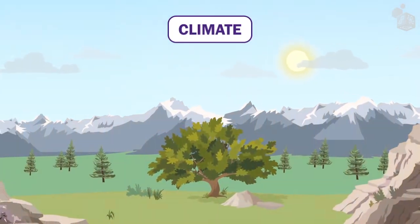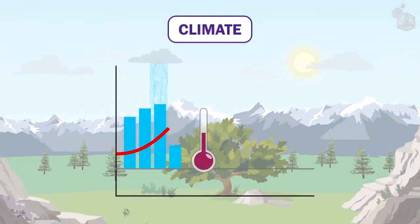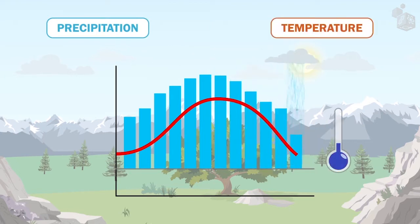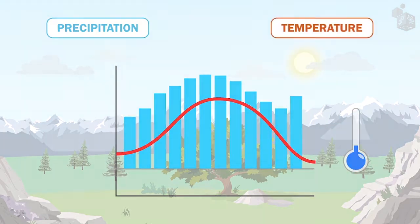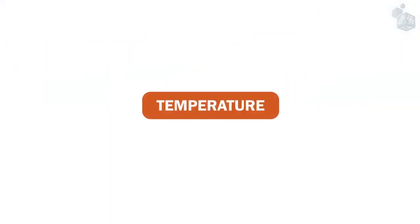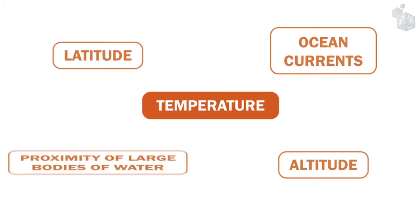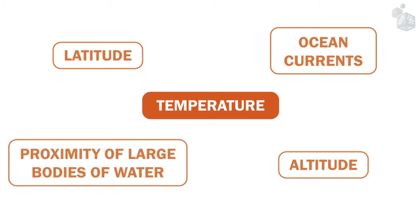The climate of a region is characterized by its typical precipitation and temperature patterns. The temperature pattern of a region depends on its latitude, ocean currents, its altitude, and the proximity of large bodies of water.